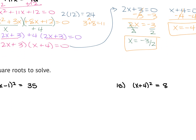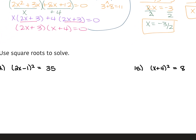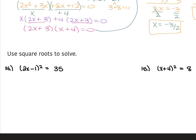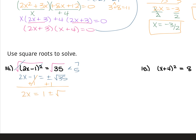For the next part, we are solving using square roots. For number 14, we have 2x minus 1 squared is equal to 35. Your binomial squared is by itself, so we're going to take the square root of both sides. The square root cancels out the power, so you just have 2x minus 1. The square root of 35 — since 35 only has factors of 5 and 7 — stays as plus or minus the square root of 35. Add 1 to both sides: 2x equals 1 plus or minus square root of 35. Divide each side by 2, and x equals 1 plus or minus the square root of 35 all over 2.